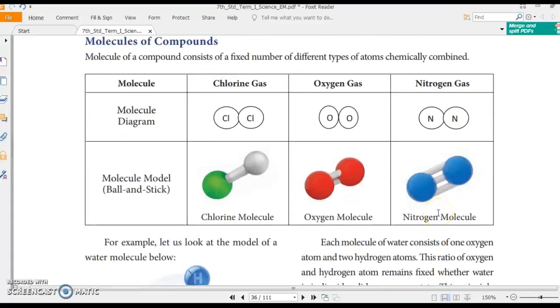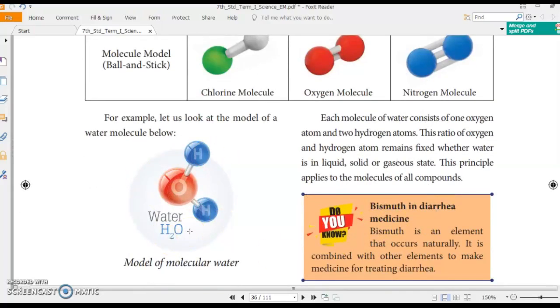Alright. Now, we need to look at the model of molecular water. One molecule of water consists of one oxygen and two hydrogen atoms as given here. Each molecule of water consists of one oxygen atom and two hydrogen atoms. This ratio of oxygen and two hydrogen atoms remains fixed whether water is in liquid, solid, or gaseous state. This principle applies to the molecules of all compounds. Okay. For example, the structure is same in ice and in water vapor. Okay. Ice, water vapor, and water has the same molecular structure which is drawn here.